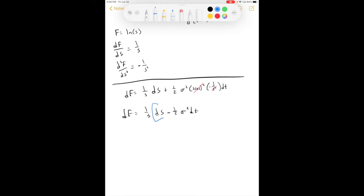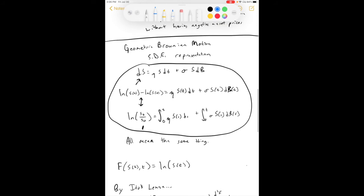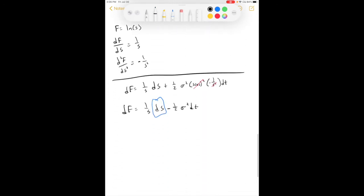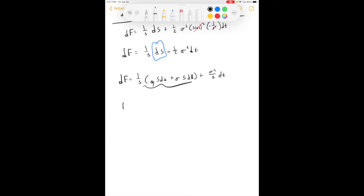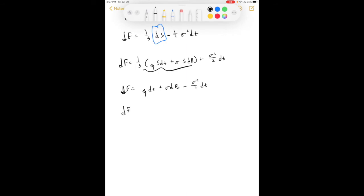Now this part, this dS, we know what that dS is because we have a log normal random walk up there. So we can take that and just plug that in down here for dS. So we've got now df equals 1 over S mu S dt plus sigma S dB minus sigma squared over 2 dt. Let's go ahead and move this forward. So we end up with mu dt plus sigma dB minus sigma squared over 2 dt. Rearrange that to get all of the dt's together. That's mu minus sigma squared over 2 dt plus sigma dB.